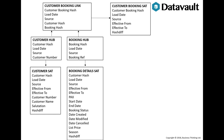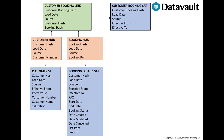We used the DataVault 2 approach and ended up with two hubs — customer and booking — one link, customer booking, and three satellites. We have three types of table: hubs in red, links in green, and satellites in blue.